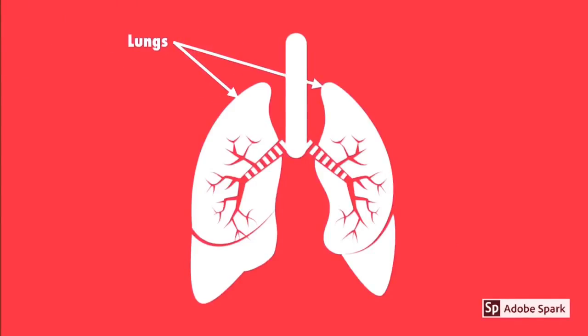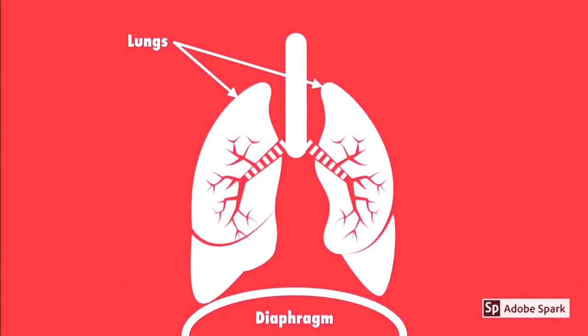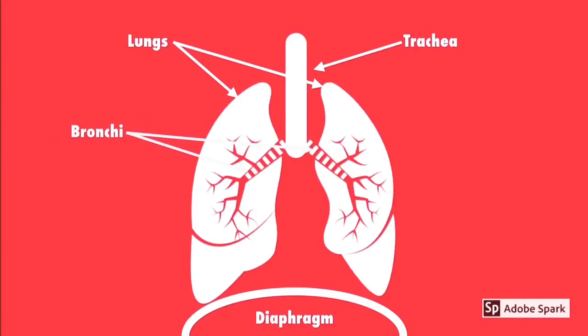The sacs that hold everything are called the lungs, which are pushed up and down by the diaphragm, allowing you to breathe in and out. This pipe here is the trachea — it's where the air you breathe enters the lungs. The trachea branches off into two pipes called the bronchi, which then branch off into smaller pipes called the bronchioles.